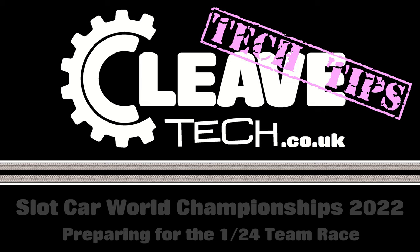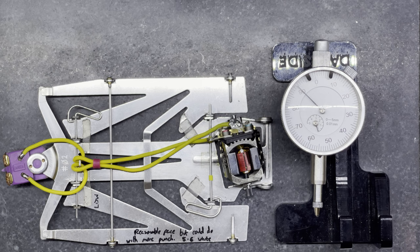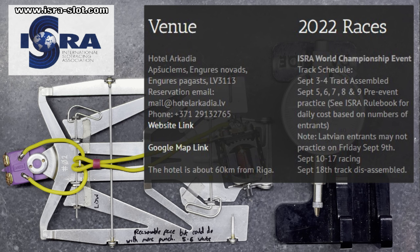This is the biggest event on the slot racing calendar for the year, and there are 139 people registered to race in the team race, which is the first event. The event starts on the 5th of September and carries on to the 17th of September if you make it all the way to the end in the last class. We'll talk about the other classes in upcoming videos, but we're going to concentrate on the very first class, which is 24th production team race.